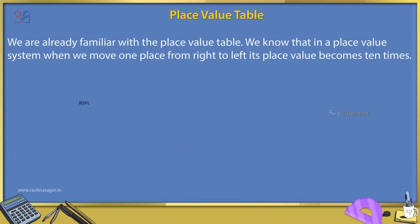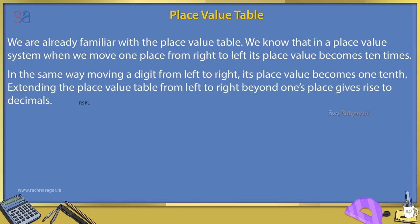We are already familiar with the place value table. We know that in a place value system, when we move one place from right to left, its place value becomes 10 times. In the same way, moving a digit from left to right, its place value becomes 1 tenth. Extending the place value table from left to right beyond one's place gives rise to decimals.